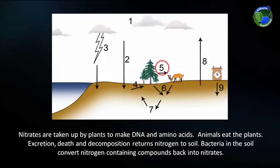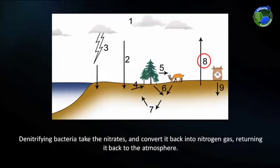Animals eat the plants. Excretion, death, and decomposition returns nitrogen to the soil. Bacteria in the soil convert nitrogen-containing compounds back into nitrates. Denitrifying bacteria take the nitrates and convert it back into nitrogen gas, returning it back to the atmosphere.